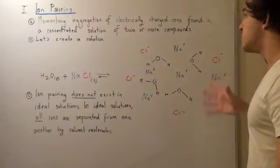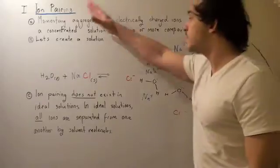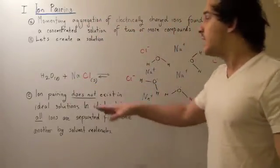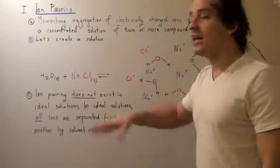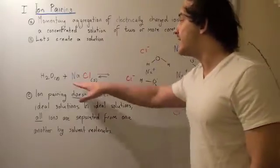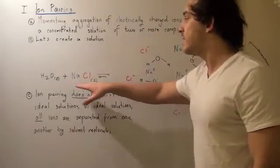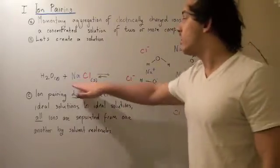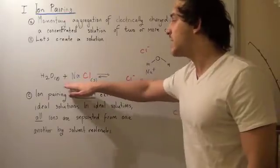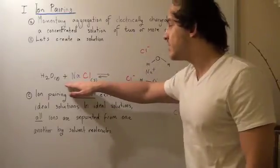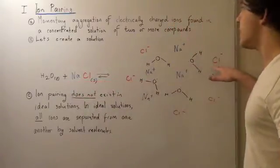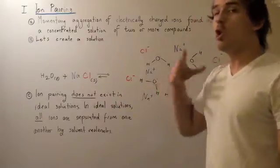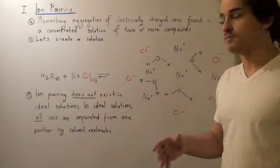And that's the difference between an ion pair and an ionic bond. An ionic bond is not for the moment — it stays, it exists. If this sodium chloride is left untouched, the ionic bond will continue to exist. But in this case, the ion pair only exists for a moment.